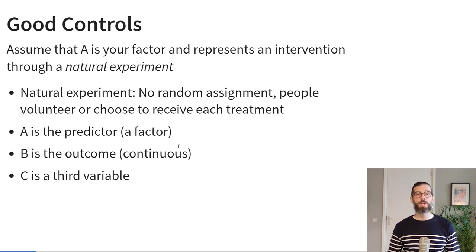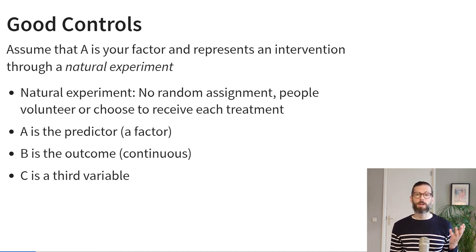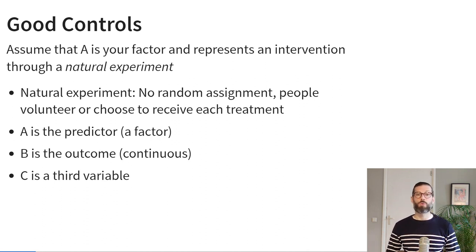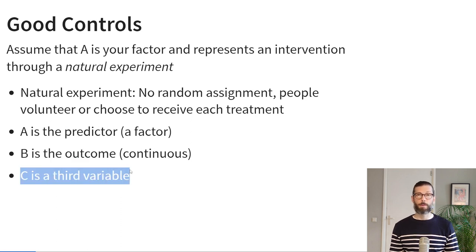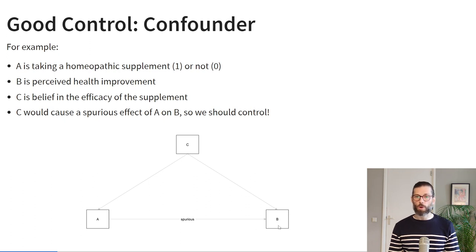So very briefly, let's discuss what is a good control variable. Assume that variable A is a factor — a categorical predictor representing an intervention that occurred through a natural experiment, where people self-selected into two groups with no random assignment. Variable B is a continuous outcome, and factor C is a third variable. One example of a good control is when A causes B, but C additionally causes both A and B.